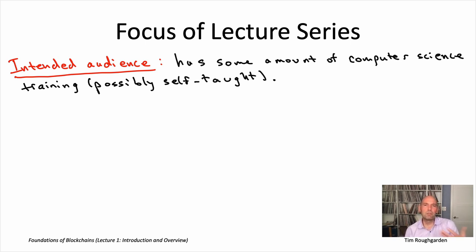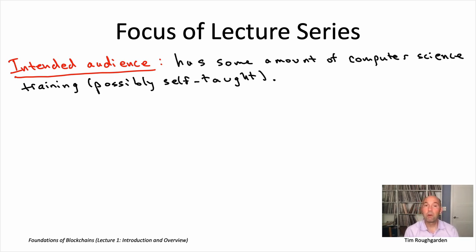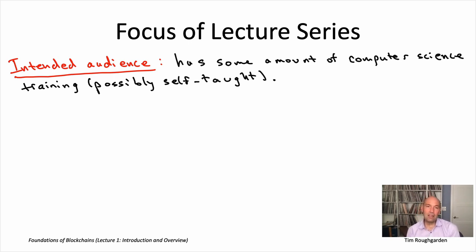Either way is totally fine. What do I mean by some computer science training? For example, I'd expect a typical viewer to be somewhat comfortable with programming — not necessarily in blockchain-specific programming languages, but maybe just some general purpose languages like Python, Java, etc. Ideally, you have the level of mathematical maturity that you're forced to acquire when you study computer science — for example, if you want to understand how and why various algorithms work. That said, if you hate math or you're feeling shaky on it, the parts of the videos which are on mathematical proofs you should be able to skip without much loss of continuity.